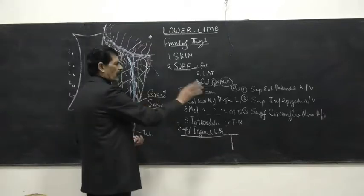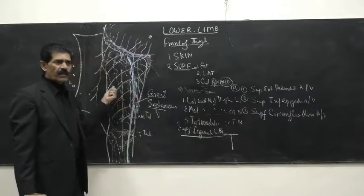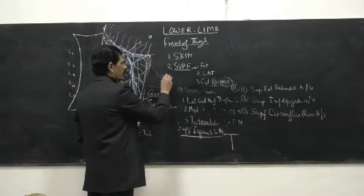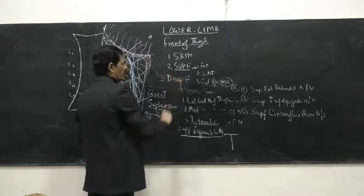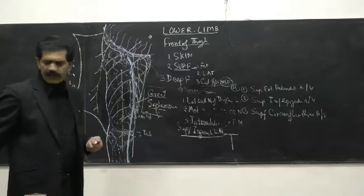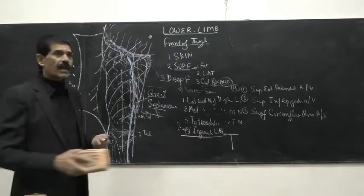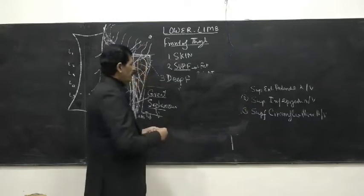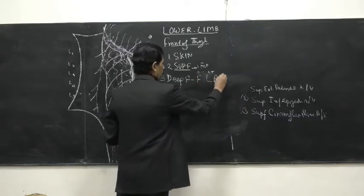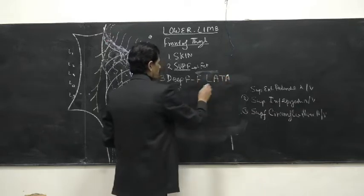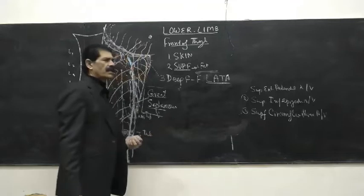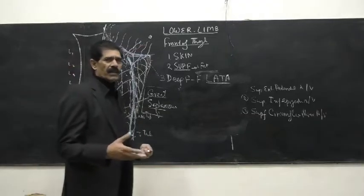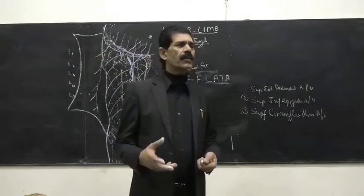When we remove all these structures but preserve the great saphenous vein, the third layer we expect is the deep fascia. The deep fascia of the front of the thigh is called the fascia lata. It consists of thick bundles of collagen fibers and protects the deeper structures — muscles, arteries, veins, nerves, and bones — acting as a shock absorber. It also gives the shape to the thigh, broad above and tapering downward.